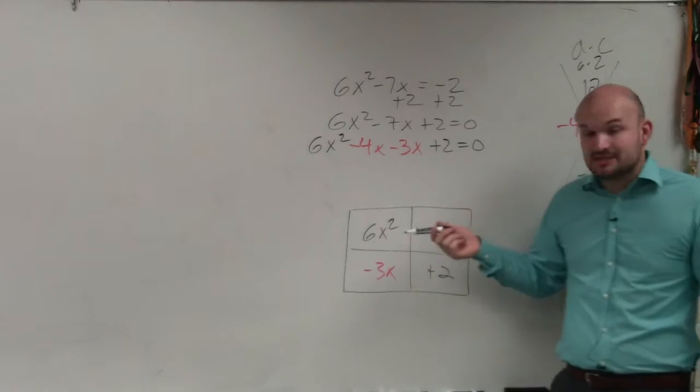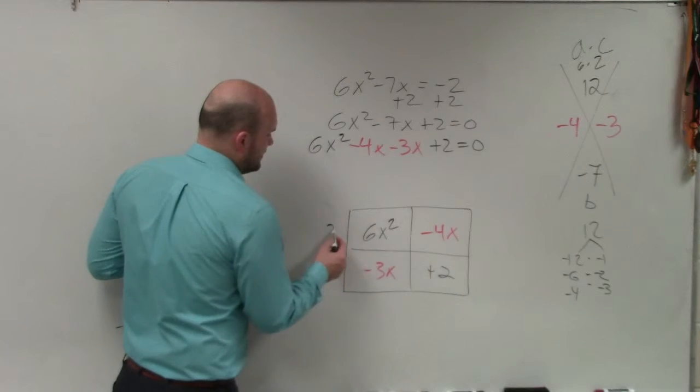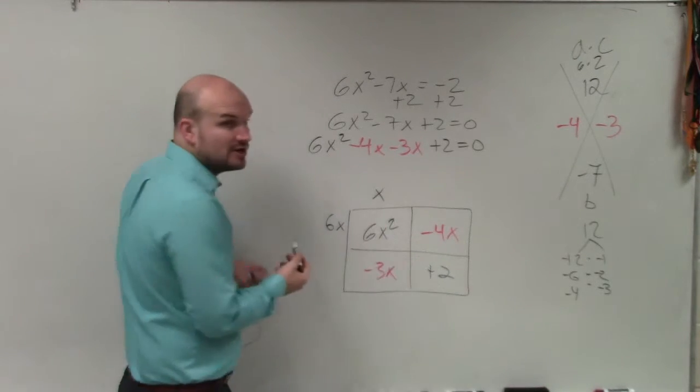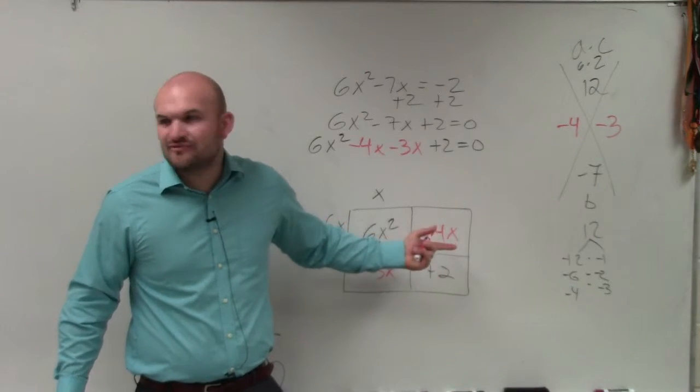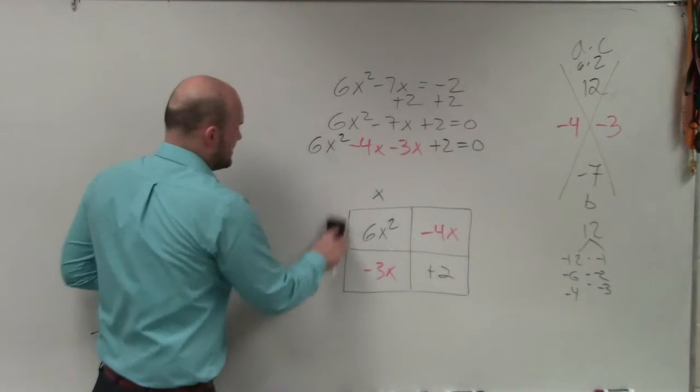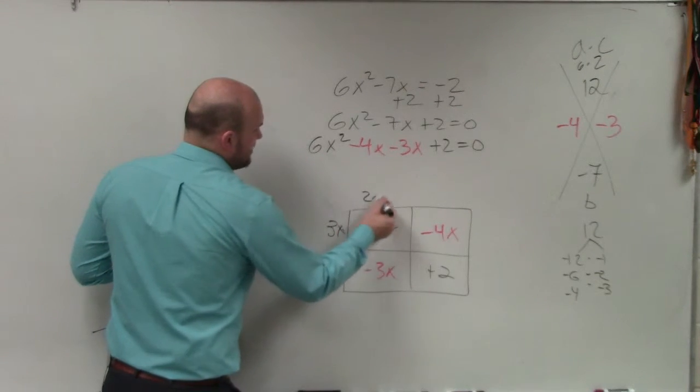3 and 2, 3x and 2x, right? Or, see, the problem is, though, if you did like 6x and x, that works, right? But then 6x times what gives you negative 4? That's like some fraction, right? So that's not going to work.